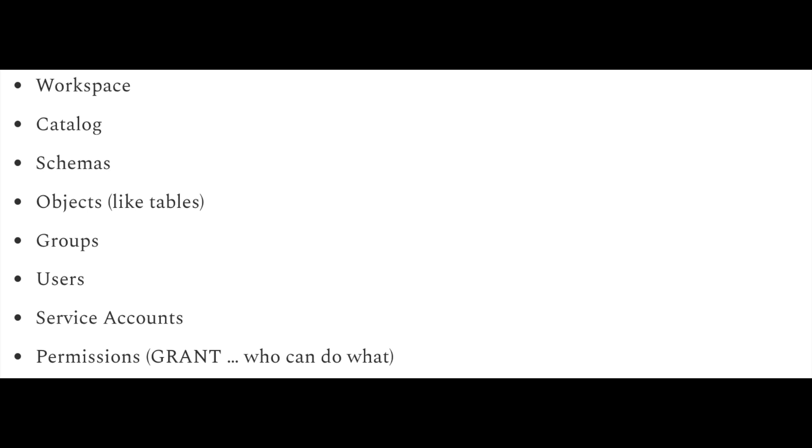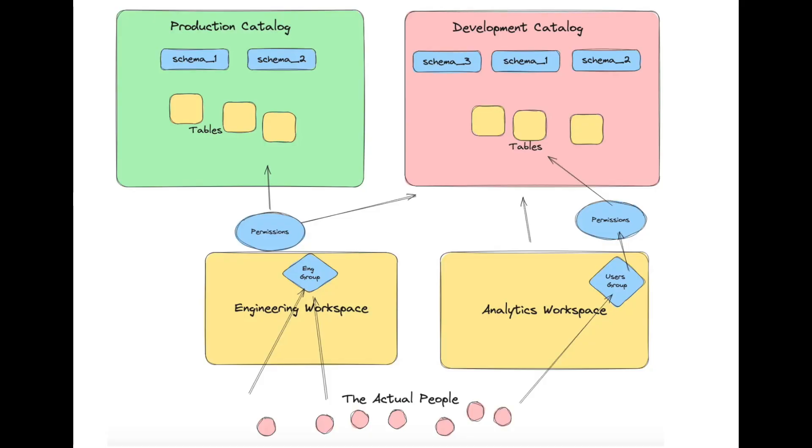The high-level components of Unity Catalog include: workspaces, catalogs, schemas, objects like tables, groups, users, service accounts, and permission grants. Here's a high-level view of what a Unity Catalog setup could look like. A lot of the design work goes into upfront thinking — do I need a production catalog and a development catalog to keep those environments separate? What schemas exist inside each? Which are available in which catalog?